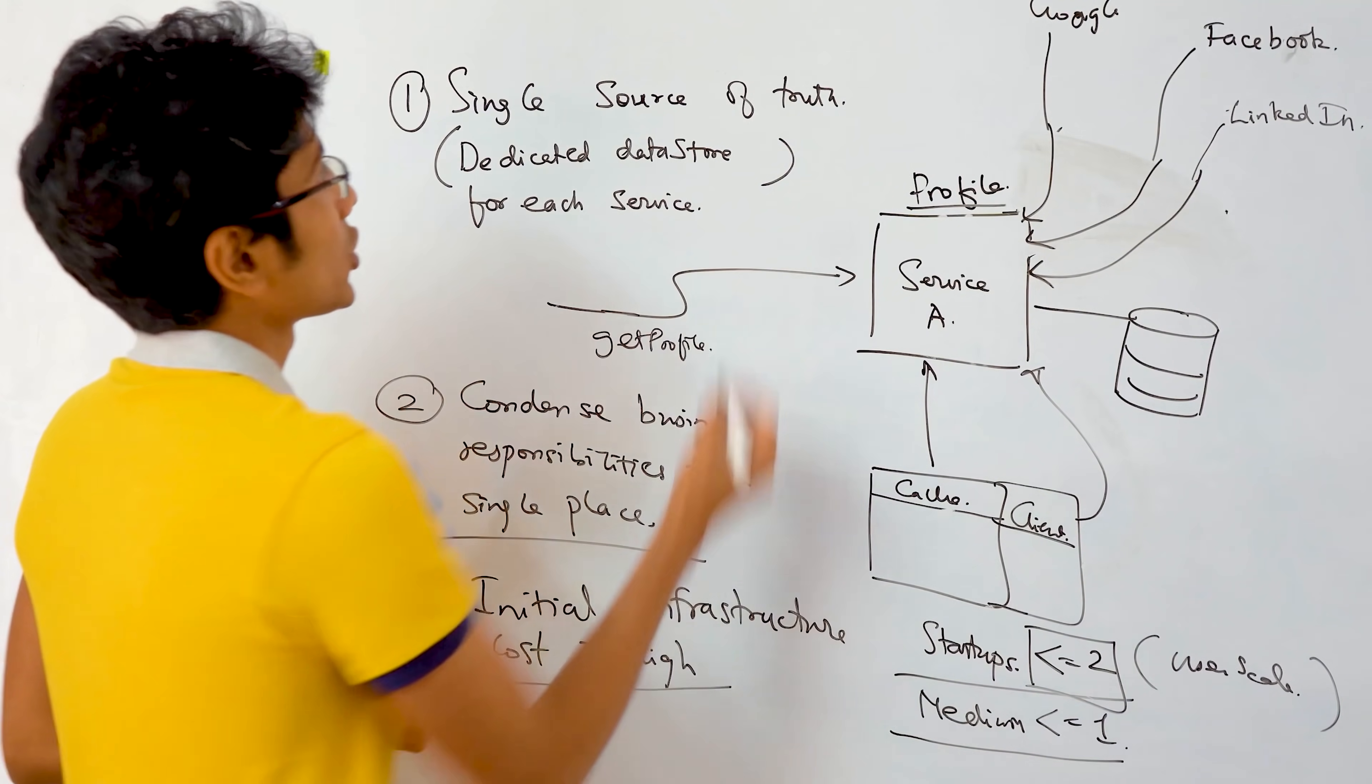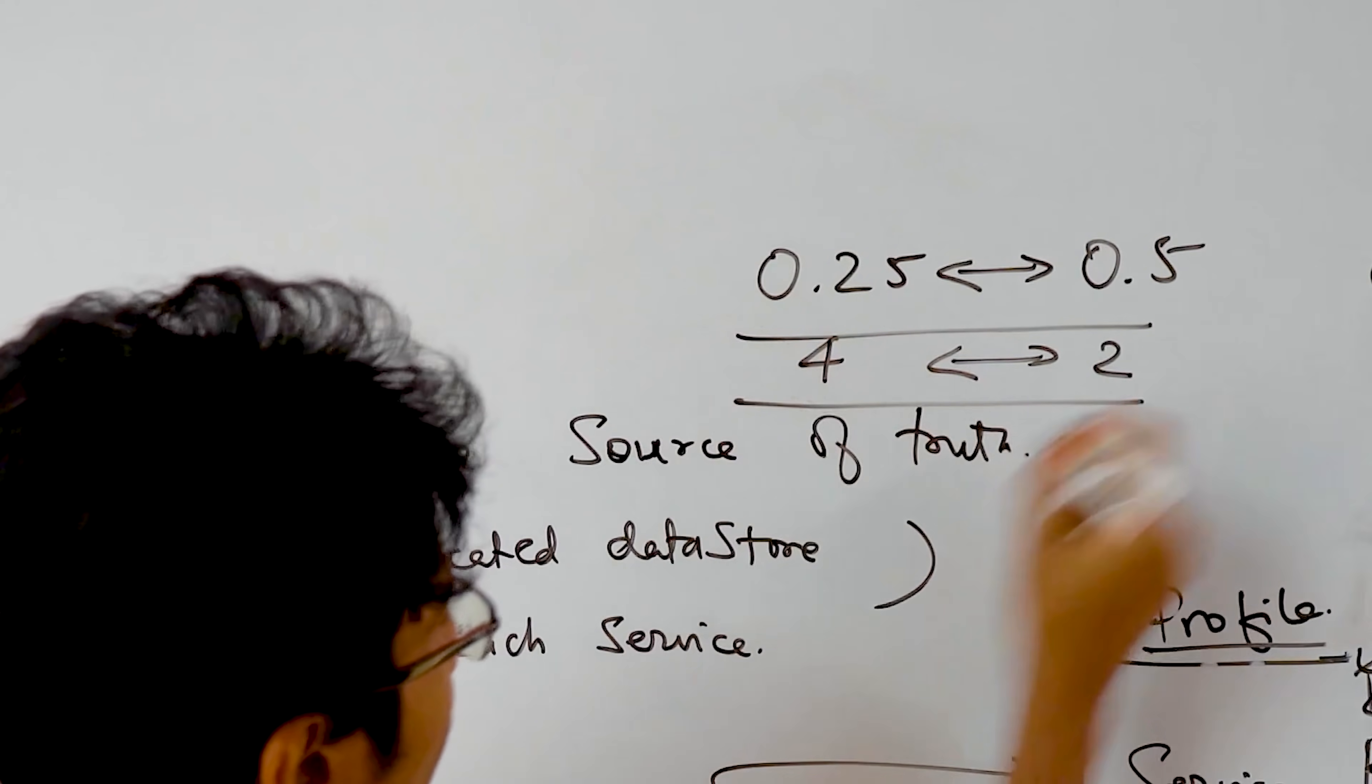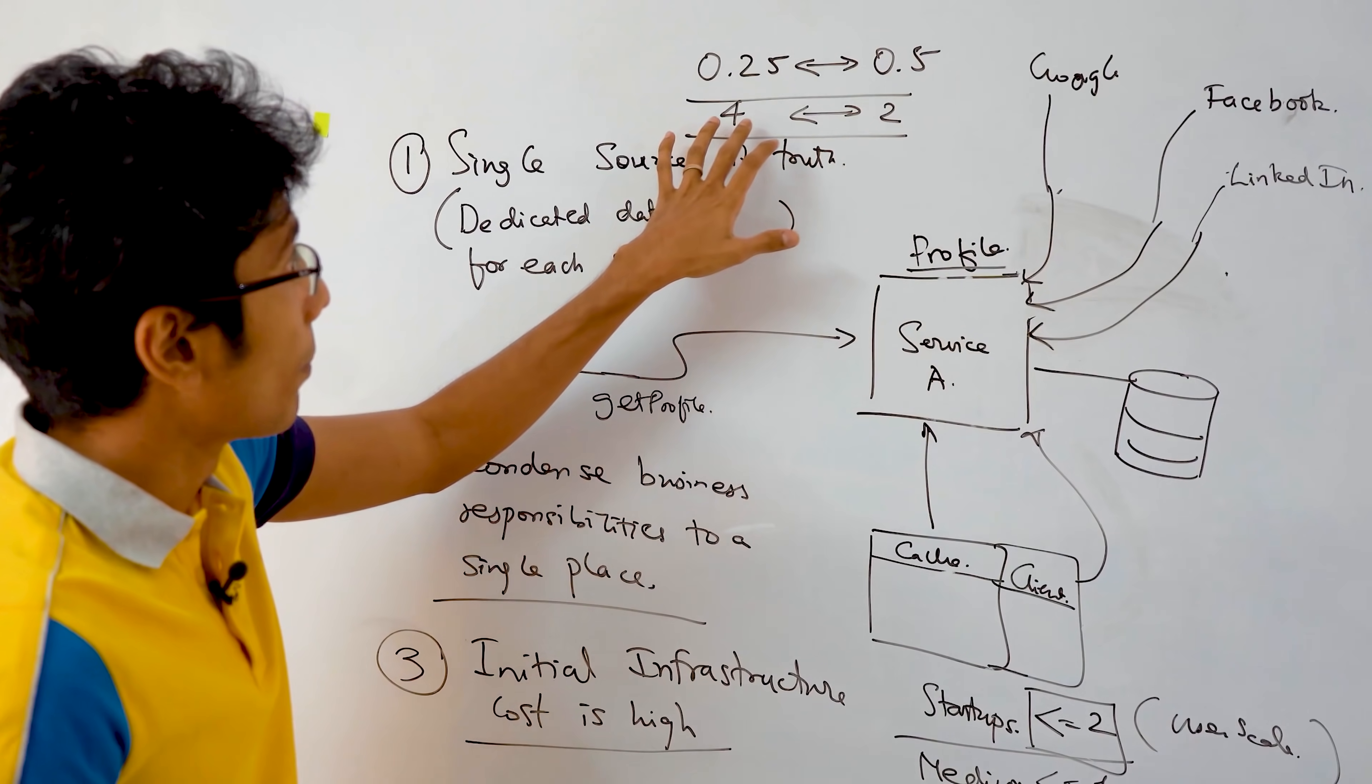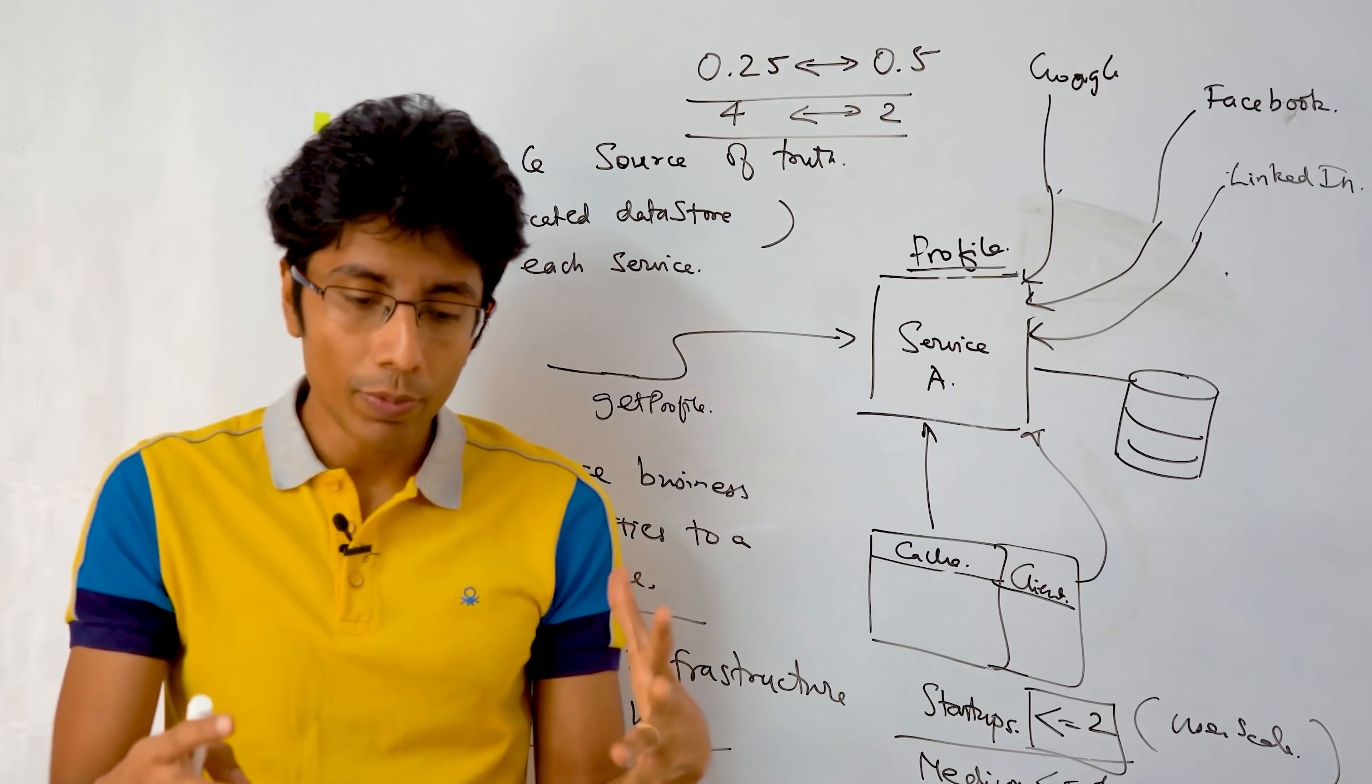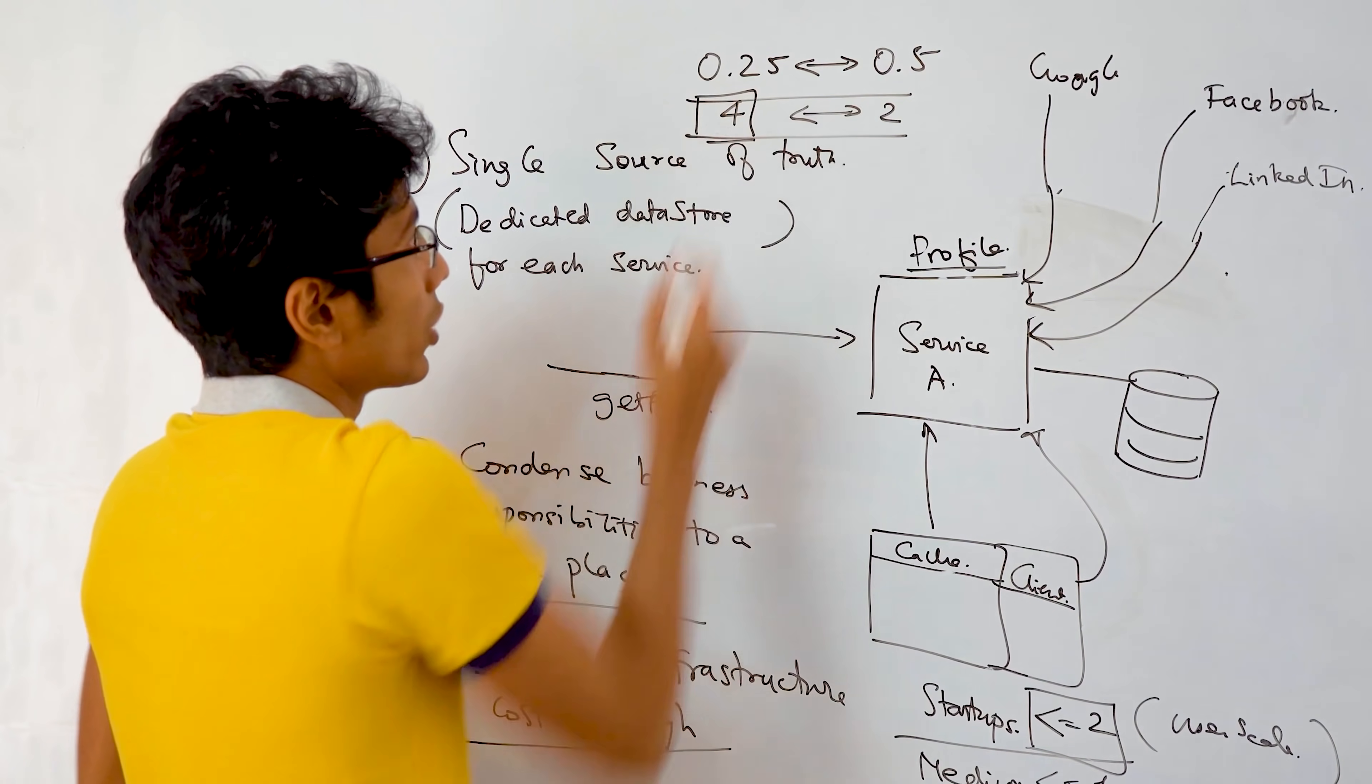And for a large organization, basically two people to four people per service. And the reason I say this is because two people is good. There's no single point of failure, but if it's a large service, you might need multiple people working on different things. One person might be doing a proof of concept. Two people might be doing the current features which are required by the product team. And one person might be fixing bugs or making sure that support is being taken care of. So four people for one service is good.